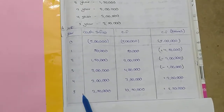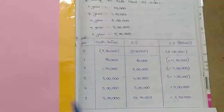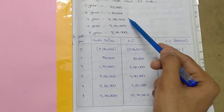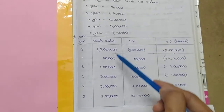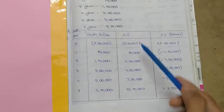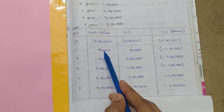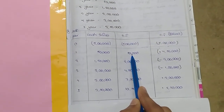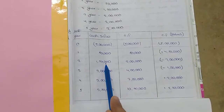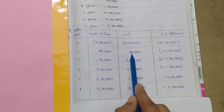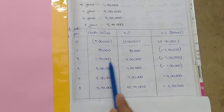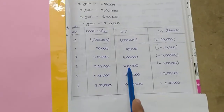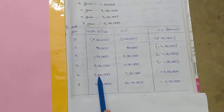For the first year, cash inflow is fifty thousand. Second year is one lakh fifty thousand. The cumulative cash flow is calculated by adding each year's inflow to the previous total. First year plus second year: fifty thousand plus one lakh fifty thousand equals two lakhs. Two lakhs plus two lakhs equals four lakhs. Four lakhs plus three lakhs equals seven lakhs.